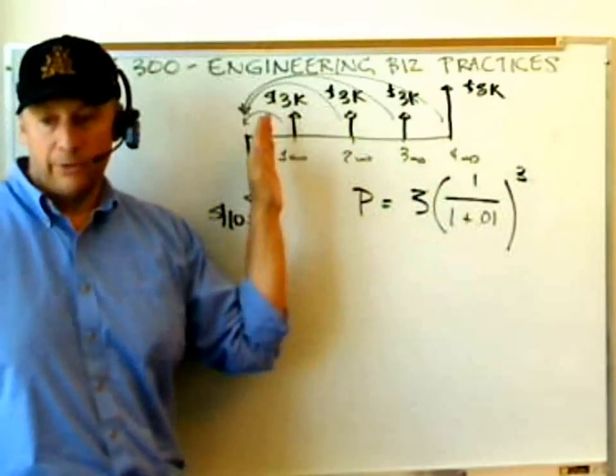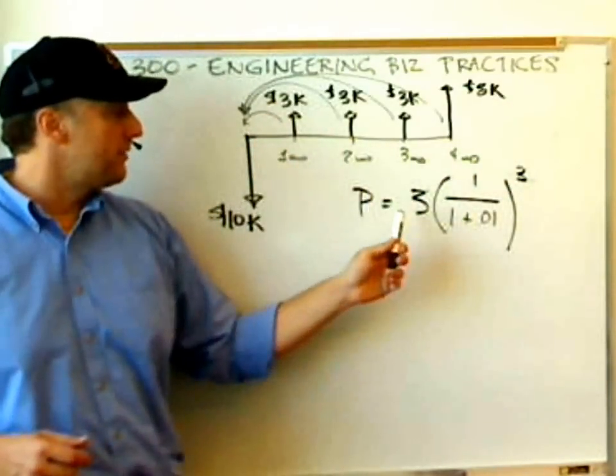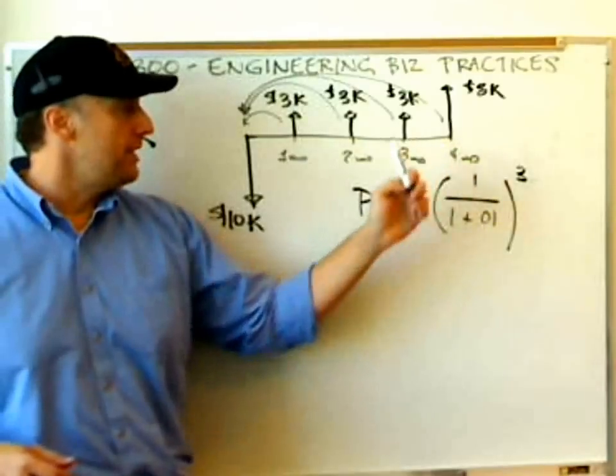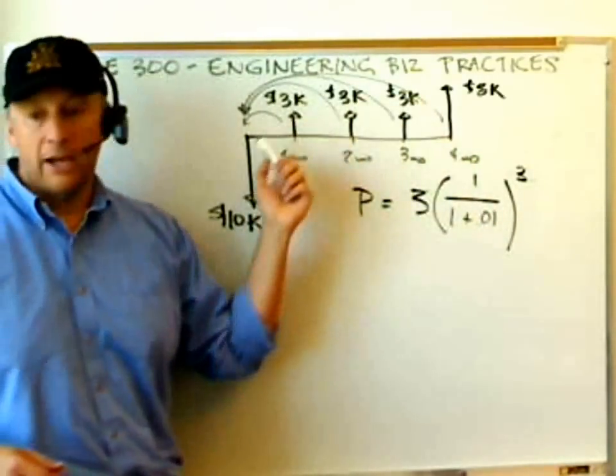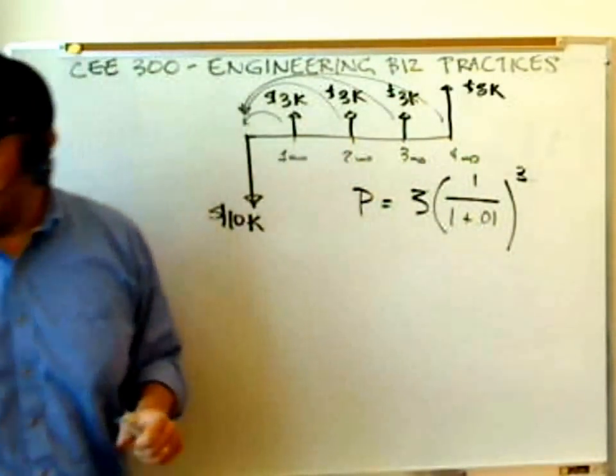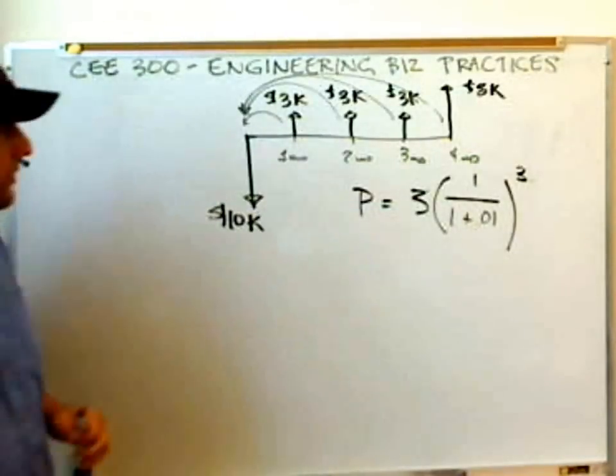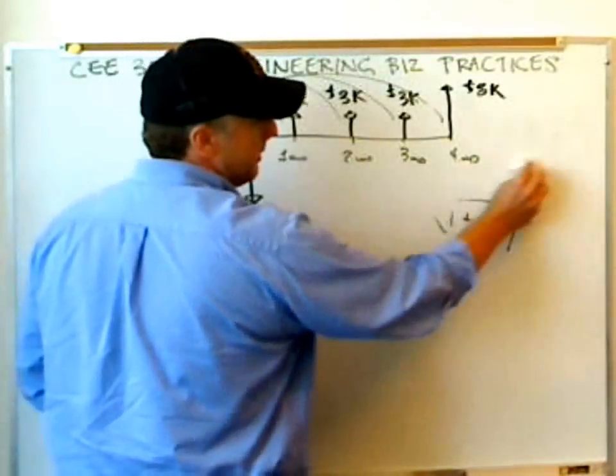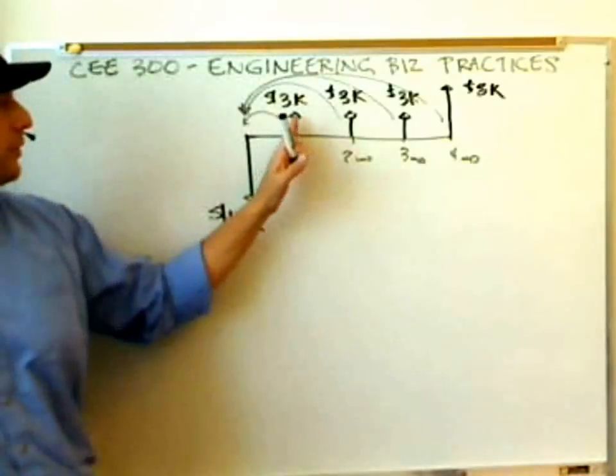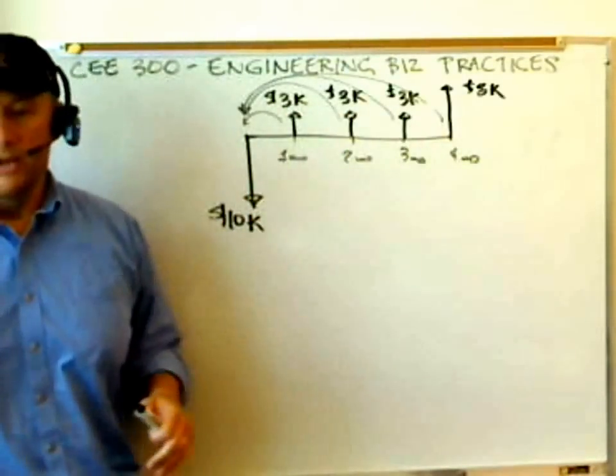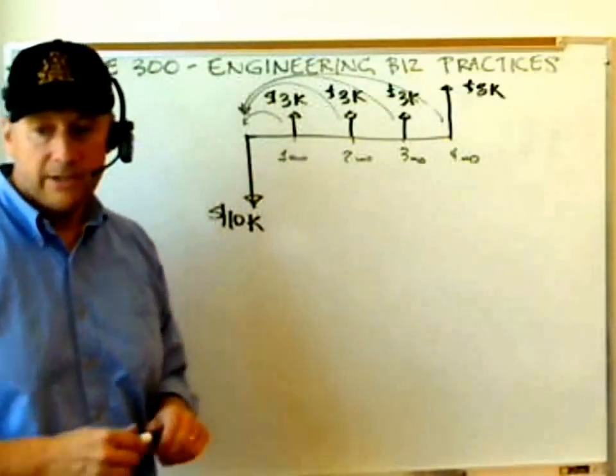That is, we know that delaying these revenues into the future makes them worth less. This is why we have to discount them. Instead of doing the same calculation three times, it would be convenient if we could wrap all three of these calculations into a single calculation. And in fact, there's a way to do just that. Let me give you a different formula.